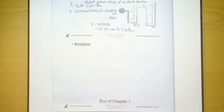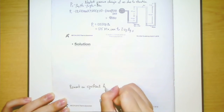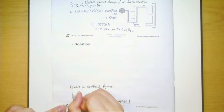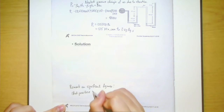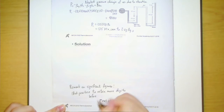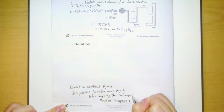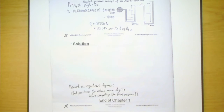A reminder on significant figures: it is good practice to retain more digits before computing the final answer. If your final answer requires three significant figures, retain four or five significant figures during intermediate calculations to get a more accurate result. That is the end of chapter one. Thanks for watching. If you have any further questions, please send us an email and we will reply as soon as possible.